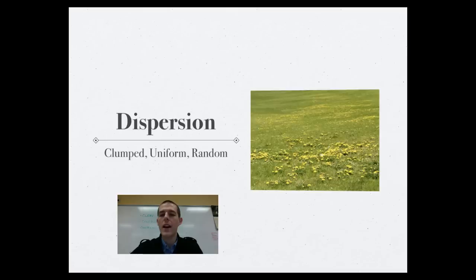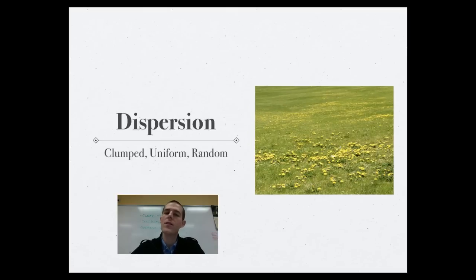And the last one is a random distribution pattern. And this is just where individuals are spread out all over the place. And a good example of this is plants that have got seeds that are spread by the wind, like the dandelion. You can look there on our field and you can see in the front, you've got a bunch of dandelions. Then there's kind of a gap. Then in the back, you can see some more. So that would be a random dispersion pattern.